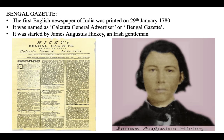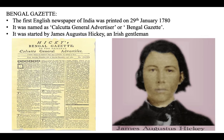The Bengal Gazette, the first English newspaper of India, was printed on the 29th of January 1780. It was named the 'Calcutta General Advertiser' or 'Bengal Gazette.' It was started by James Augustus Hickey, an Irish gentleman. Our very first English newspaper was printed in 1780, by which time the British had already established themselves in India, having arrived in 1608.